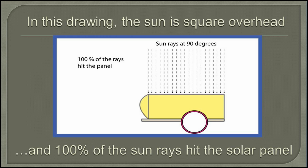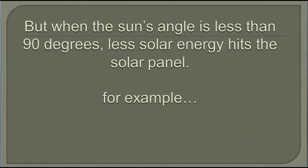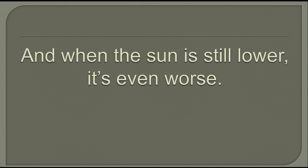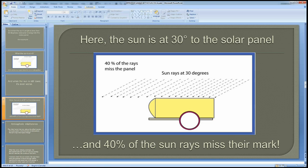But when the sun's angle is less than 90 degrees, less solar energy hits the solar panel. For example, when the sun is at 45 degrees, 25% of the sun's rays miss the panel altogether. And when the sun is still lower, it's even worse. In this drawing, the sun is at 30 degrees to the solar panel and 40% of the sun's rays miss their mark.